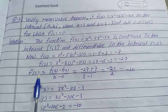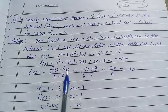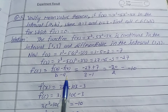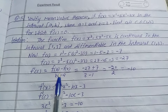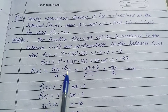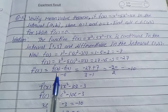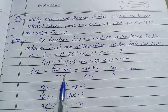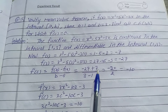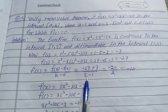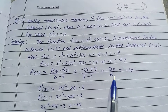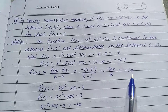f'(c) is equal to [f(b) - f(a)] / (b - a). Put in the values: f(b) means f(3) and f(a) means f(1), b is 3 and a is 1. So, f'(c) = (-27 - (-7)) / (3 - 1) = -20 / 2 = -10.